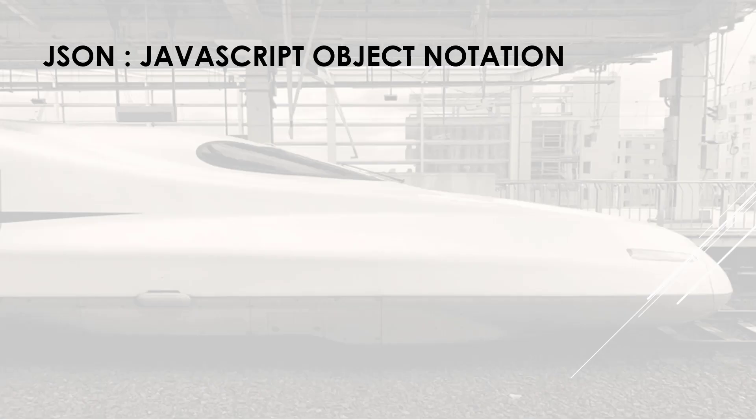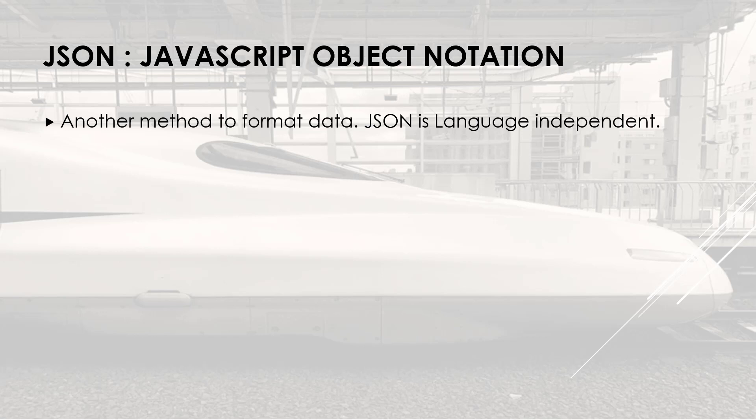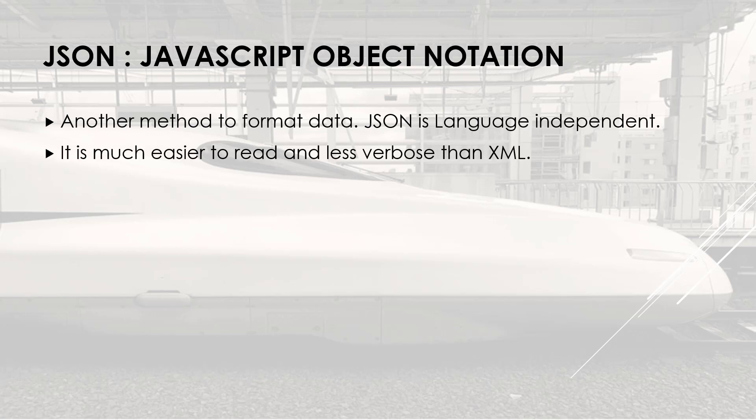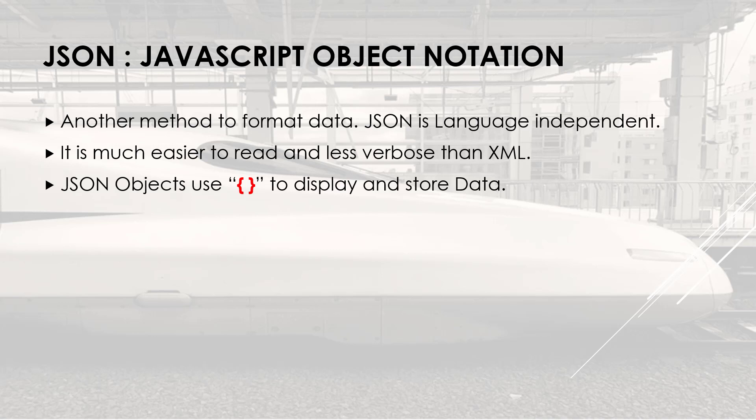JSON stands for JavaScript Object Notation. It is basically a method to format data, like XML, which is language independent. It means that you could use a programming language like Python or any other to parse and read the data from a JSON object. It is much easier to read and parse than XML, and it uses curly brackets to store and display data.